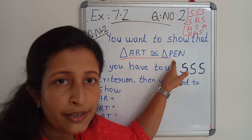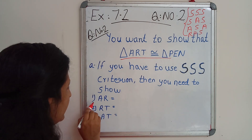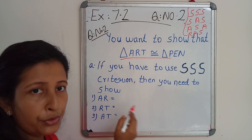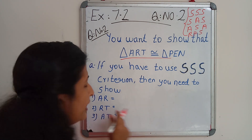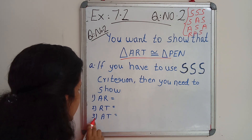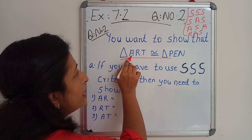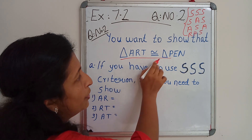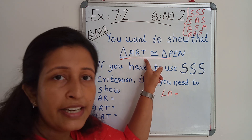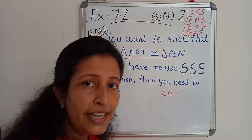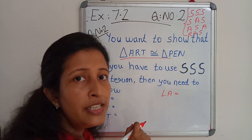According to SSS criteria, these 2 triangles are congruent. Then what all things do you have to prove? They have given that side AR equals what, side RT equals what, and side AT equals what. They have given that triangle ART is congruent to triangle PEN. From this we can write down the corresponding sides and corresponding angles of these 2 congruent triangles.